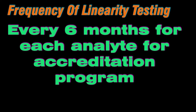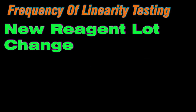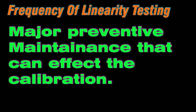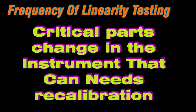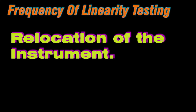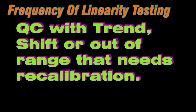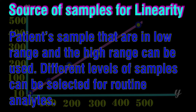How often should linearity or calibration verification be run? If our lab performs calibration verification every six months, we do not have to perform it separately for any laboratory accreditation program. Otherwise, we need to perform it every six months, whenever there is a complete change in the set of reagents to a new lot, when there is major preventive maintenance or replacement of critical parts of the instrument, or when quality control data shows a drift, trend, shift, or QC outside acceptable limits.